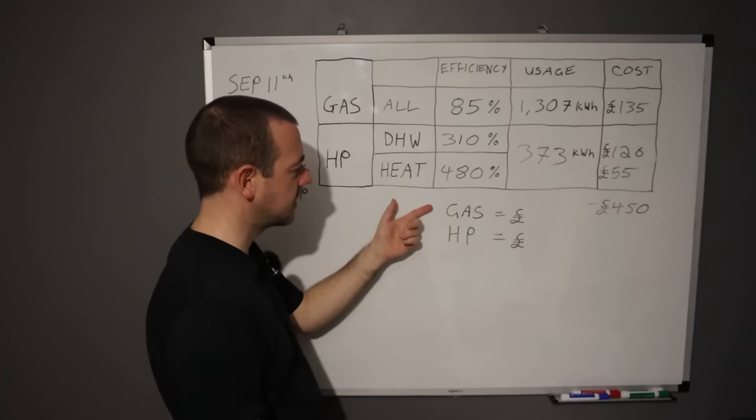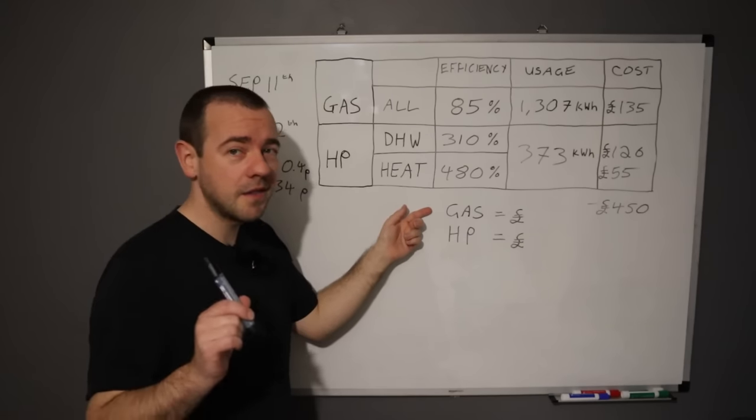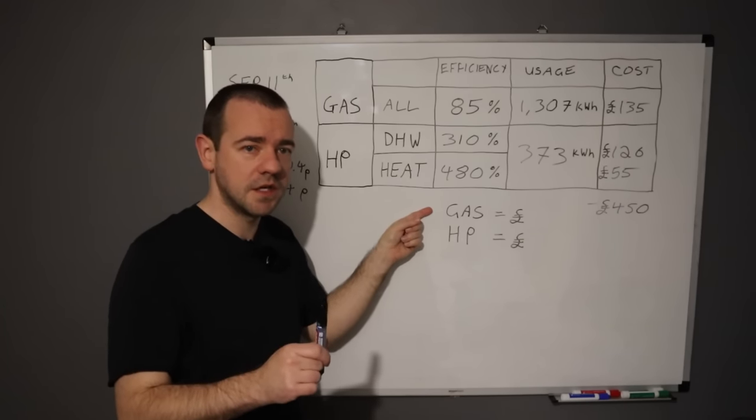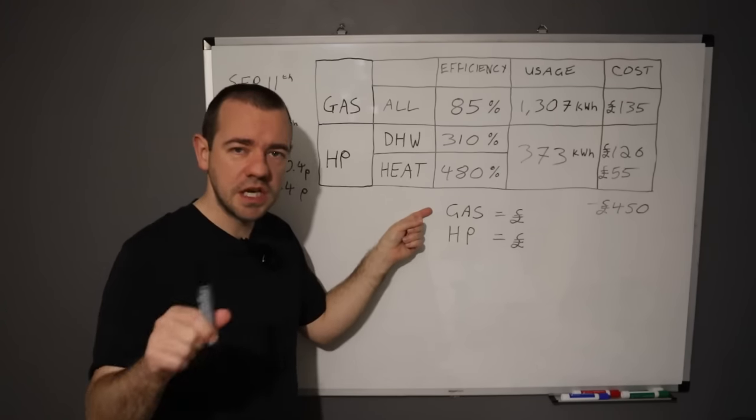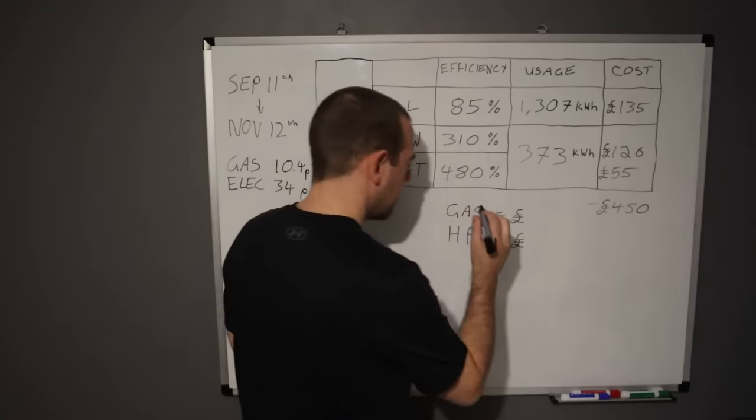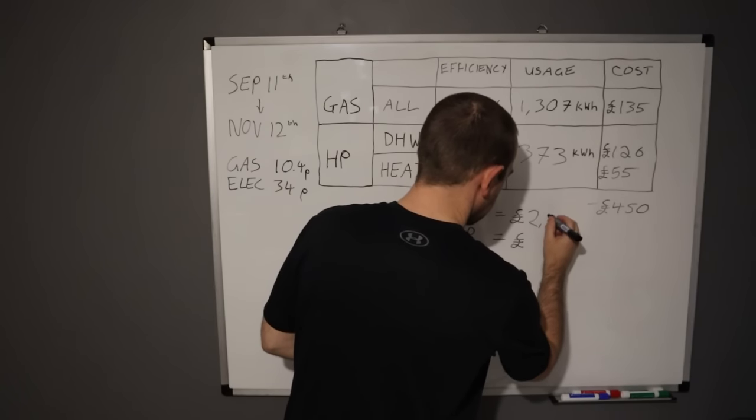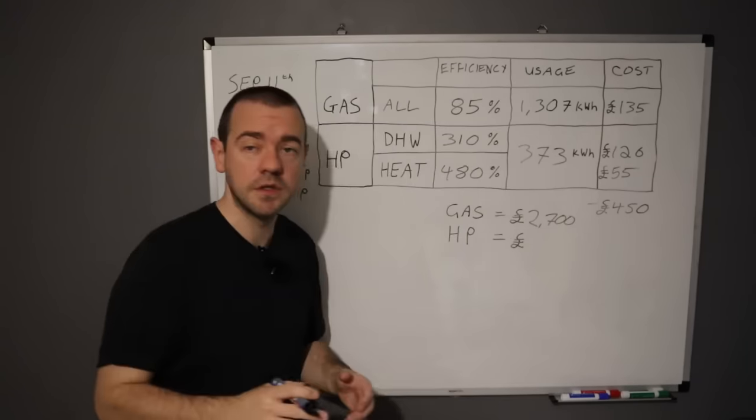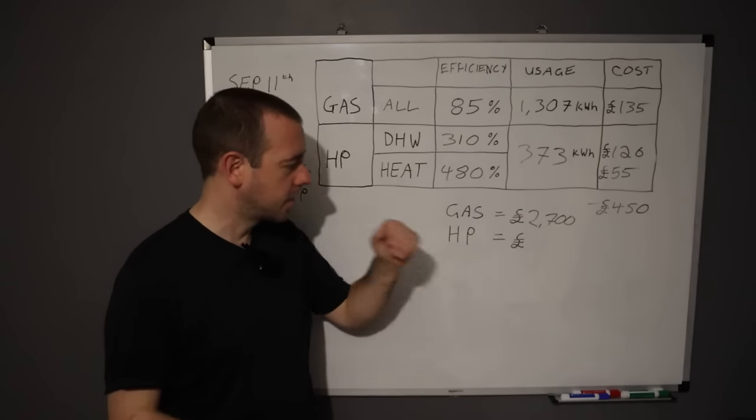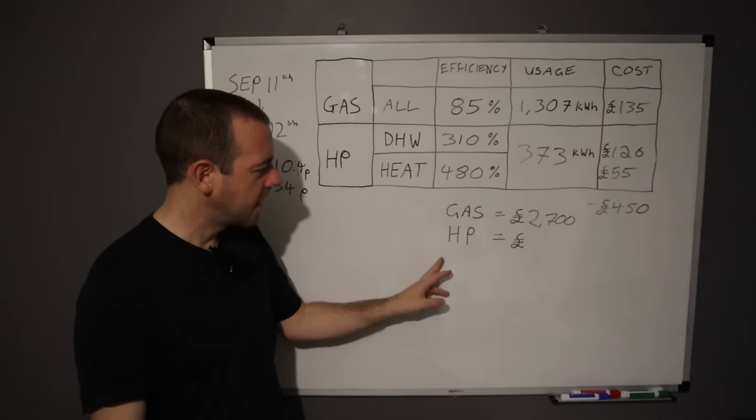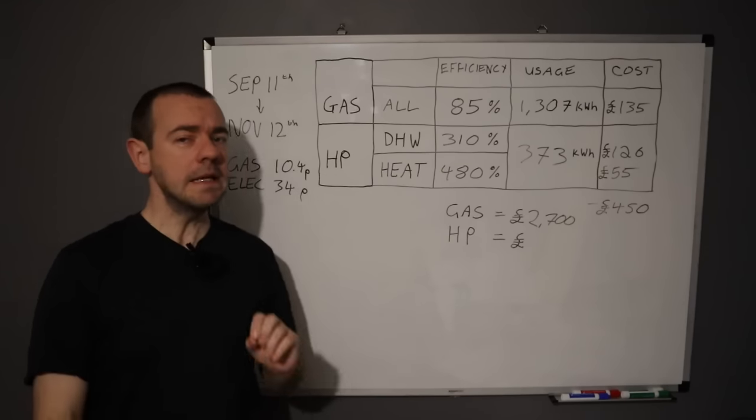So the few quotes we had to do a replacement of the gas boiler with another, and bear in mind that this doesn't include the optimization, the heat calculations, changing a few of the radiators, that was £2,700. That was the average quote we've got from a couple of companies that we asked.